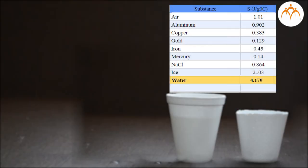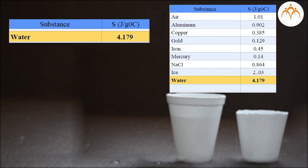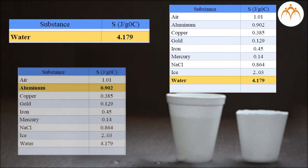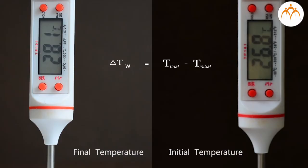The specific heat of water is 4.179 joules per gram degree Celsius. The specific heat of aluminum is 0.902 joules per gram degree Celsius. Temperature difference for water is equal to 28.1 degrees Celsius minus 26.8 degrees Celsius, which is 1.3 degrees Celsius.